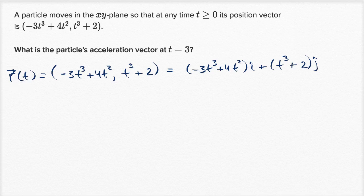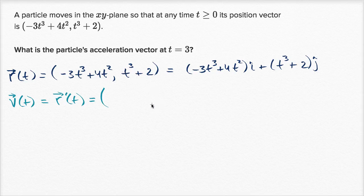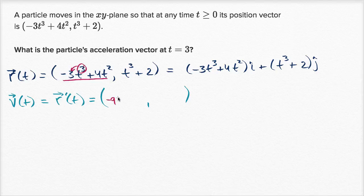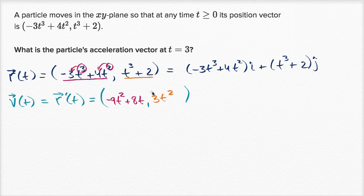The key realization is that if you have the position vector, the velocity vector is just the derivative of that. So v(t) equals r prime of t. We take the corresponding derivatives of each component using the power rule. The derivative of the x component gives negative nine t squared plus eight t, and the derivative of the y component gives three t squared.